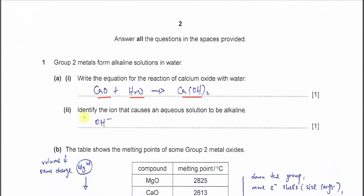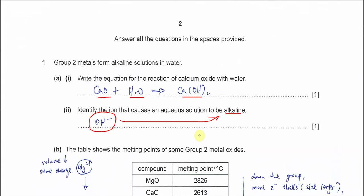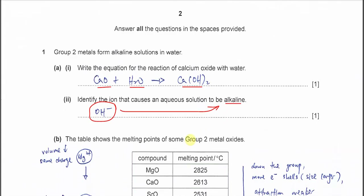Part 2: identify the ion that causes an aqueous solution to be alkaline. The answer is hydroxide. The hydroxide ion is responsible for the alkaline solution.